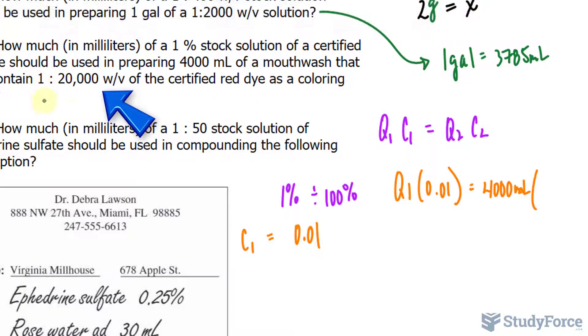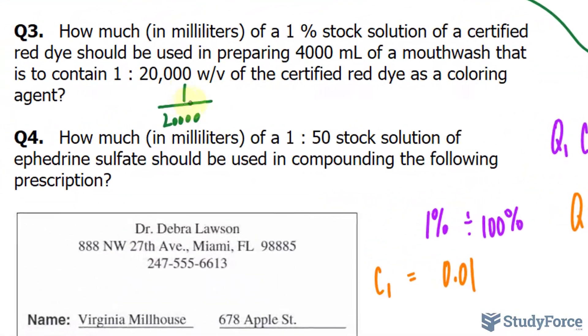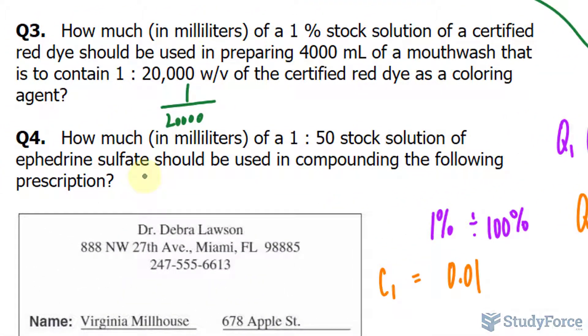The way you interpret that is you write it down as a fraction, at least that's what I like to do, 1 over 20,000. And think of the top part being 1 gram per 20,000 milliliters, think of it like that.